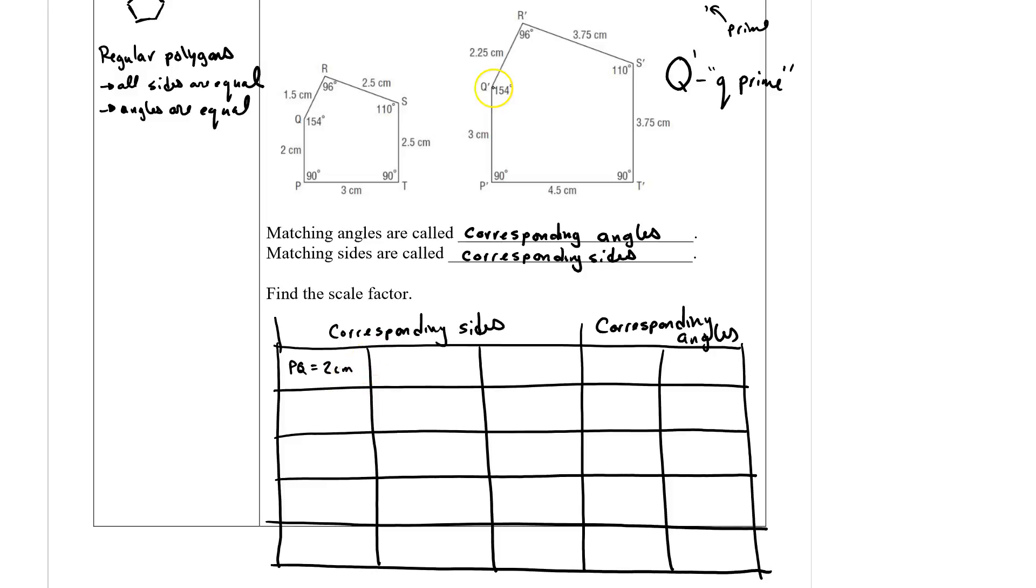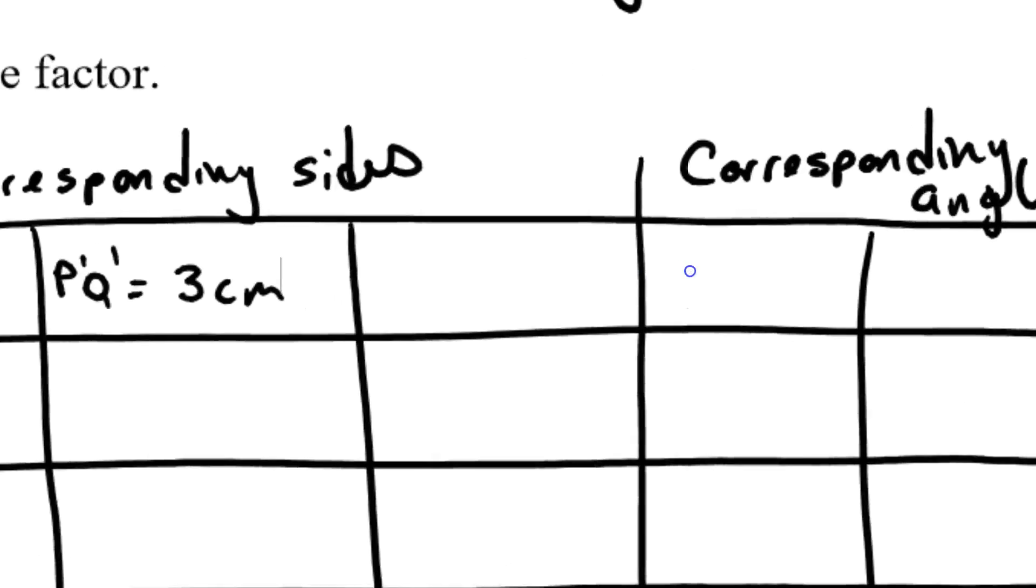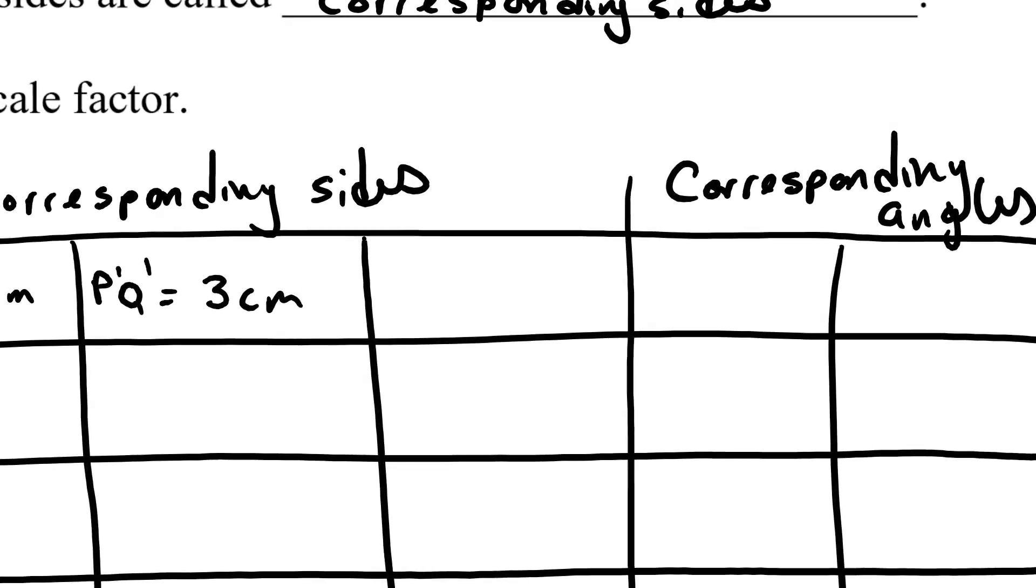So if I were to say the length of PQ, I'm going to say that equals two centimeters. And the length of P prime Q prime equals three centimeters. So if we want to zoom in here and find exactly what the scale factor is, I'm going to say P prime Q prime over PQ is P prime Q prime is three, and PQ is two. If I go three divided by two, that's going to be 1.5.